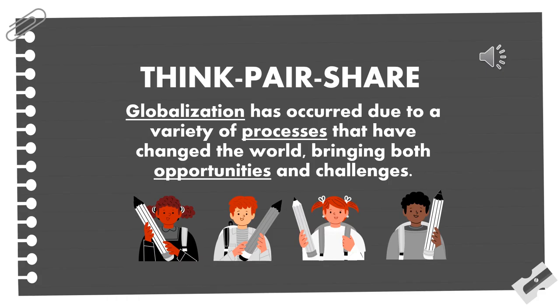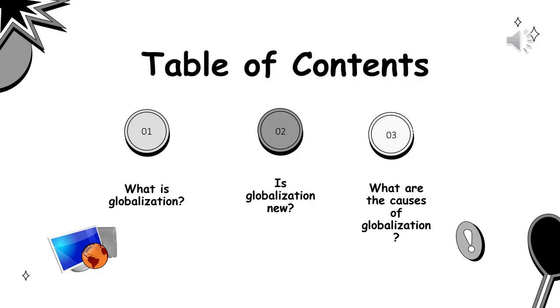As a reminder, whenever we think about the concept of globalization or its effects on different subjects or fields, we should align our findings with the main Statement of Inquiry in our unit, which states that globalization has occurred through a variety of processes that have changed the world, bringing both opportunities and challenges. To learn more, we're going to study case studies and charts, comparing the history of globalization in the past and how it has affected our world today.